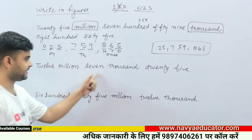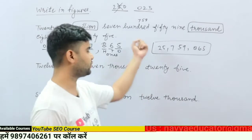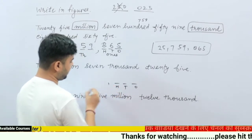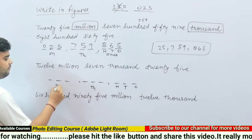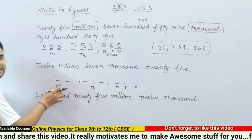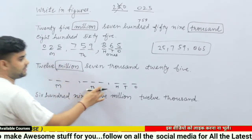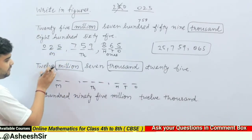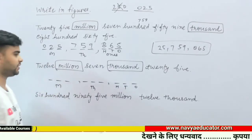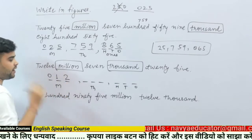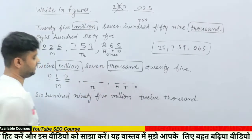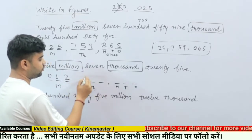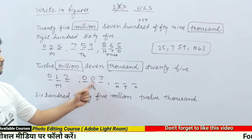Now the next number: 12 million seven thousand twenty-five. This is a different question. We make the place value chart again — three digits for ones, three for thousands, three for millions. Circle the million part and then the thousand part. Here we have 12 million, so we write 12 in the millions section by filling all three digits — write zero first, then 12, making it 012. Now for seven thousand, we must fill all three digits in the thousands section, so write two zeros then seven, making it 007.